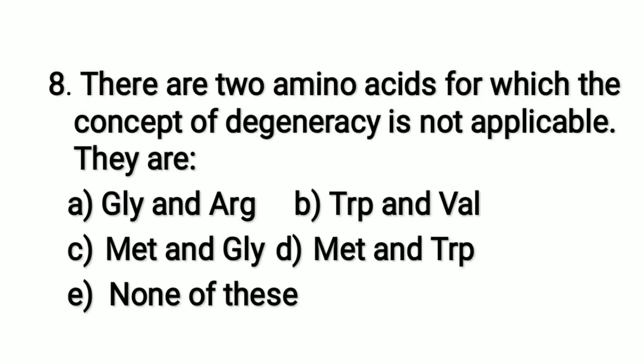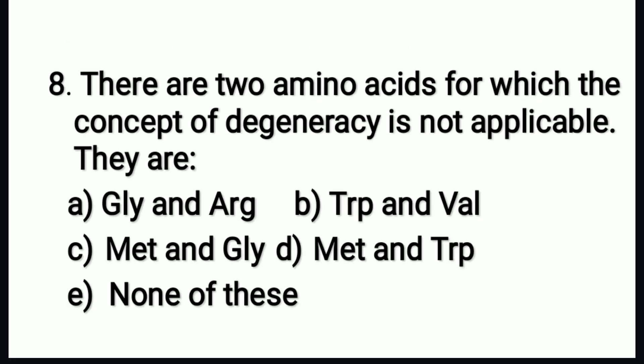There are two amino acids for which the concept of degeneracy is not applicable. They are: the right answer is option D — methionine and tryptophan. Degeneracy means an amino acid is coded by more than one codon. Methionine is coded by only one codon, and tryptophan also has only one codon.